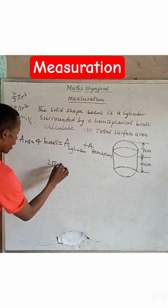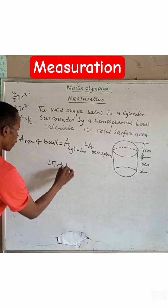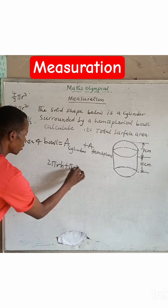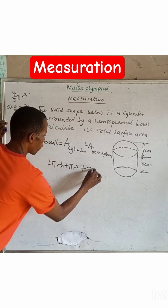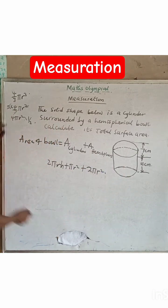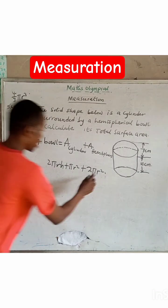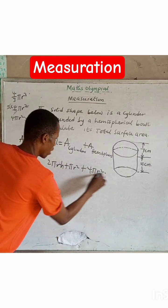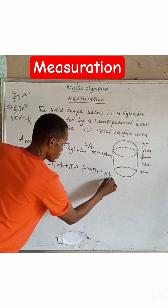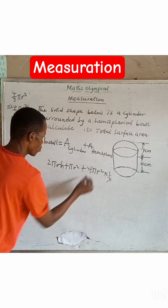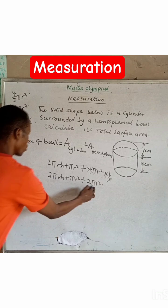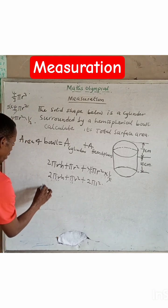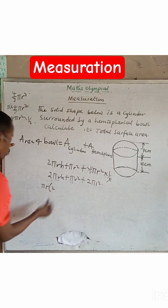So the area of cylinder is 2 pi r h plus pi r squared. That is the area of sphere plus 2 pi r squared, which is the area of hemisphere. That is half of what, half of sphere. So this counts with this. I'm going to have 2. So we're going to have 2 pi r squared. Pi r squared is common. If we take it out, we're going to have pi r squared into 2h.